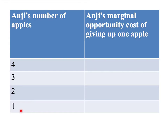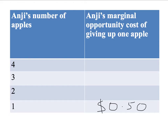Hey Anji, you've got four apples — what is the minimum amount we would have to give you to compensate you for giving up a first apple? You still have three apples left, but we want you to give up one apple. What is the minimum amount that you would be willing to accept? Let's say that Anji says she'd be willing to accept certainly no less than 50 cents for that first apple. So Anji's marginal opportunity cost of giving up the first apple is 50 cents.